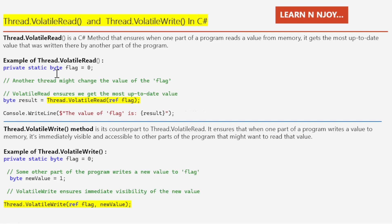Let's say we have a static flag variable of byte data type initialized with value 0 — that's what I have written: private static byte flag = 0. Now imagine another thread might change the value of flag and we want the most up-to-date value. We use Thread.VolatileRead: byte result = Thread.VolatileRead(ref flag). This statement ensures we get the latest value, which we store into the result variable and print to the console window.